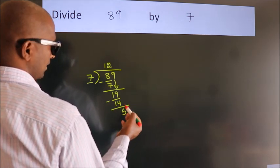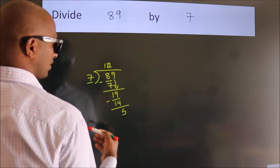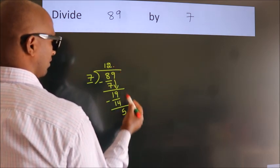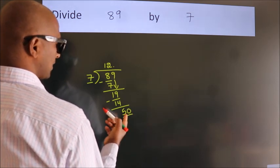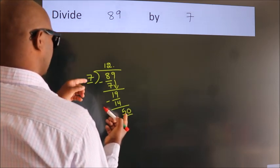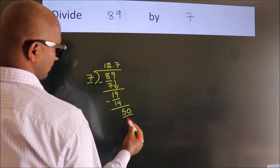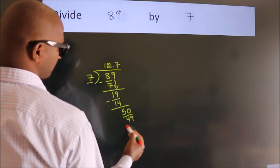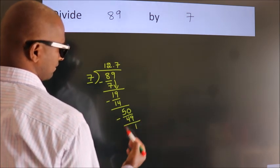After this, no more numbers to bring it down. So what we do is, we put dot take 0. So 50. A number close to 50 in 7 table is 7, 7s, 49. Now, we subtract. We get 1.